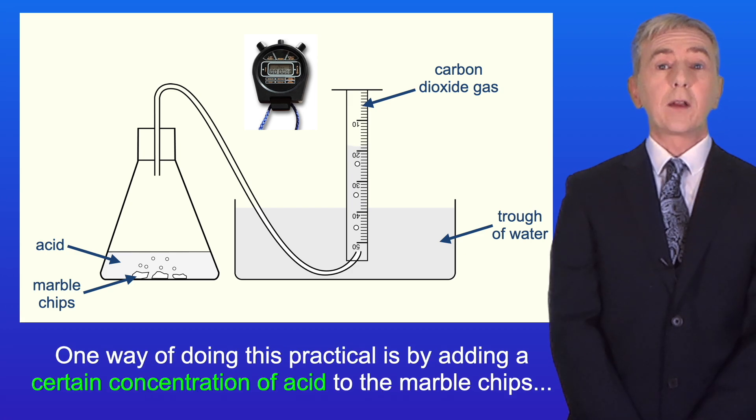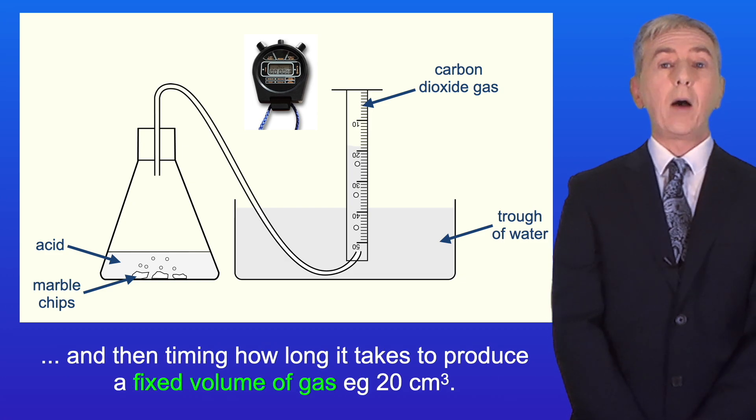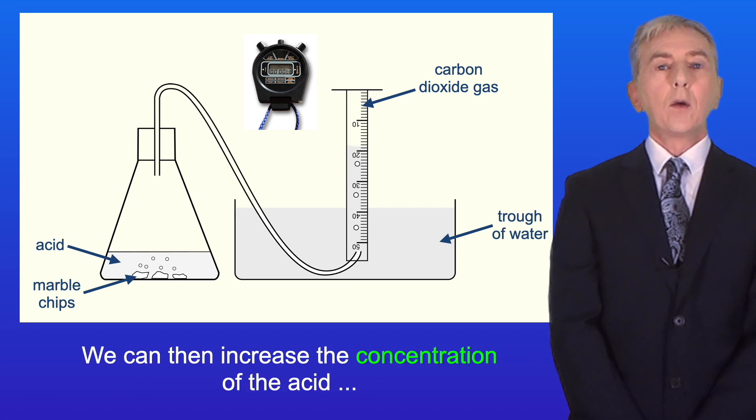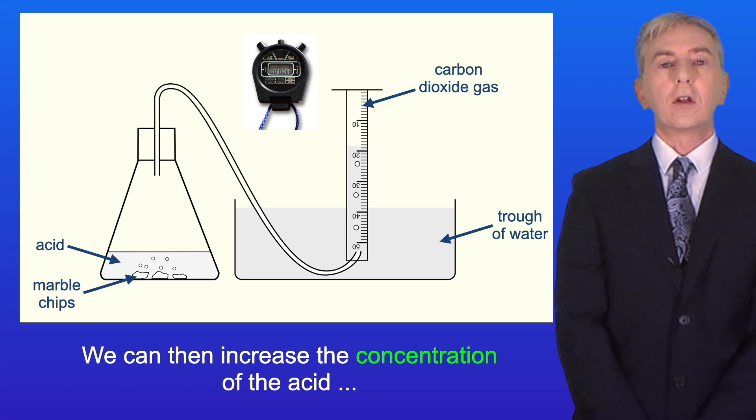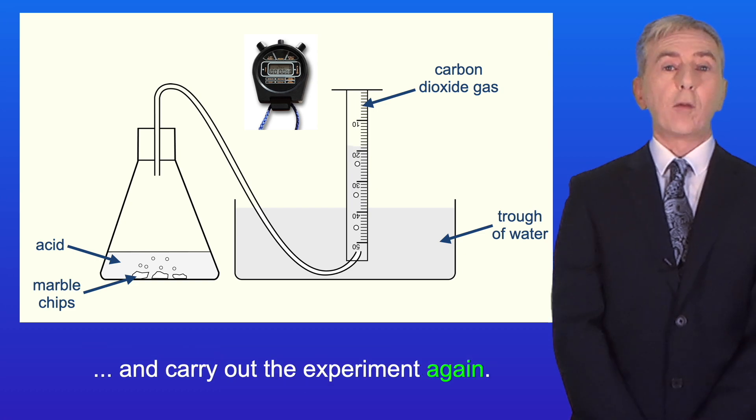One way of doing this practical is by adding a certain concentration of acid to the marble chips and then timing how long it takes to produce a fixed volume of gas, for example 20 centimeters cubed. We can then increase the concentration of the acid and carry out the experiment again.